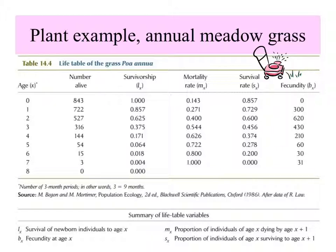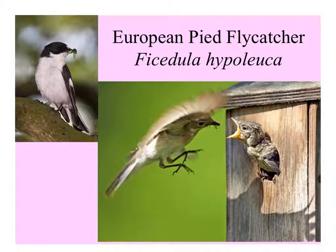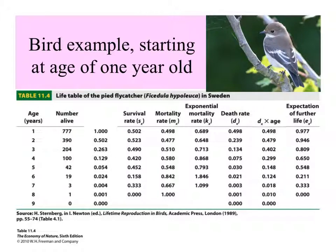These pied flycatchers are shown catching a caterpillar on the left and feeding flies to a baby in a nest box on the right. Birds can be studied over time — sometimes they're banded. Here's a life table for this bird in years. Some individuals may live as long as 8 years. From an initial population census of 777, one of those lived to the 8th year, and after 9 years, all were dead. Each column shows one of these important variables, including expectation of further life (E sub X) in the right column, which is much higher for younger birds.